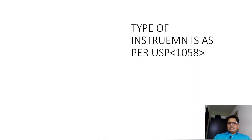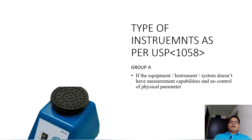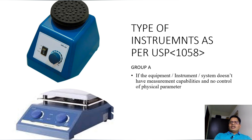As per USP 1058, there are Group A, Group B, and Group C instruments. Group A instruments are equipment or instrument systems that don't have measurement capabilities and no control of physical parameters. No measurement capability means no data is generated, no analytical analysis is performed, and they cannot control physical parameters like temperature, humidity, or any other physical parameter. Examples I have given are a vortex — no physical parameter is controlled, no data is generated — and a hot plate.